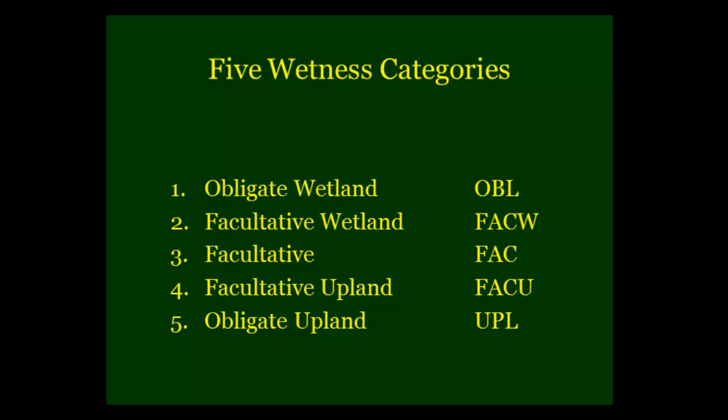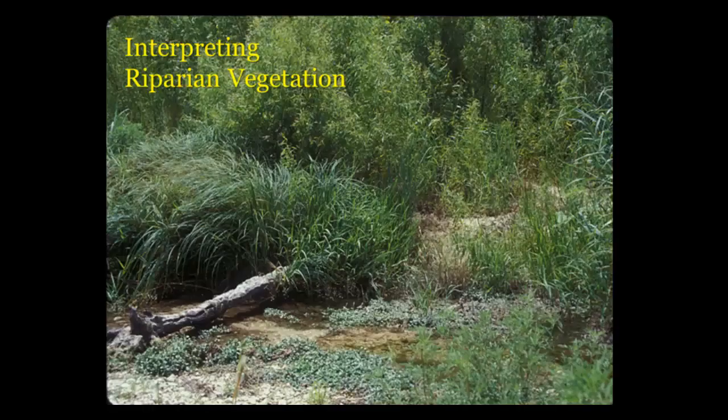The other two categories are mostly upland species — mesquite, sideoats grama, cedar — plants that grow up on the uplands. The obligate, facultative wetland, and facultative categories are the three we consider the true riparian plants. The reason we put this information up here isn't just botanical trivia — we use it as indicators of what's happening in the riparian area.